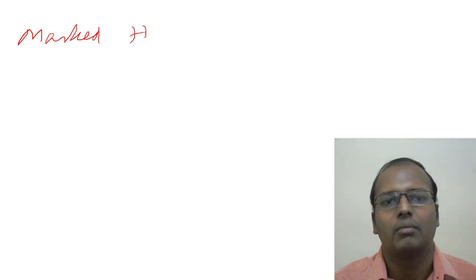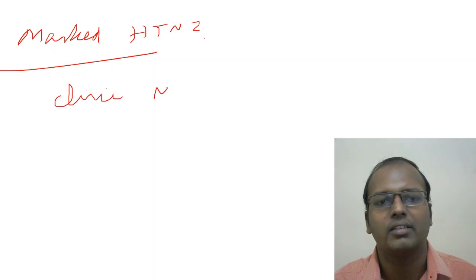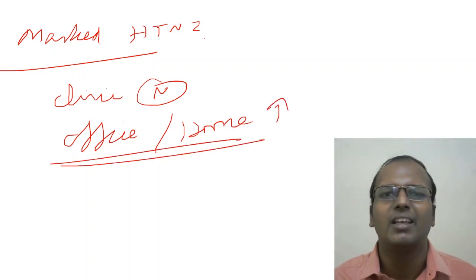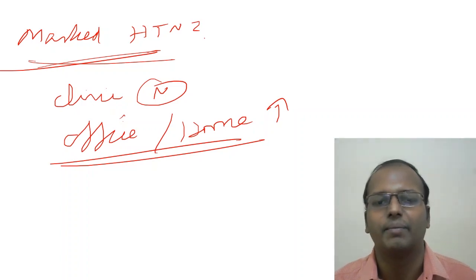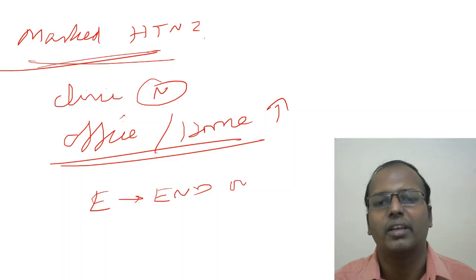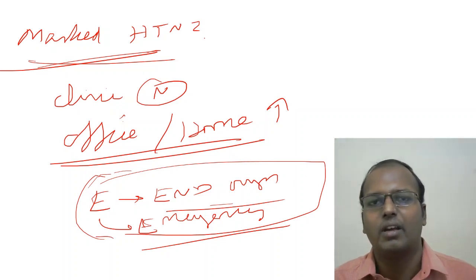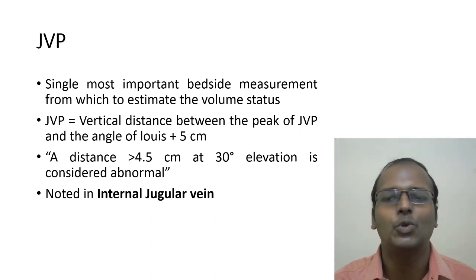Masked hypertension: BP is normal in the clinic but elevated at home or office. It is the opposite of white coat hypertension and is dangerous because it goes undiagnosed until end-organ damage (e.g., kidney disease) develops. Hypertensive emergency: very high BP with end-organ damage — 'E for emergency, E for end-organ damage.' Hypertensive urgency: very high BP without end-organ damage.